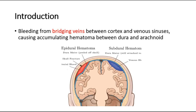Subdural hemorrhage or hematoma means that there is bleeding from the bridging veins between the cortex and the venous sinuses, causing an accumulating hematoma between the dura mater and the arachnoid mater. So it is beneath the dura mater, and is therefore called subdural hemorrhage.